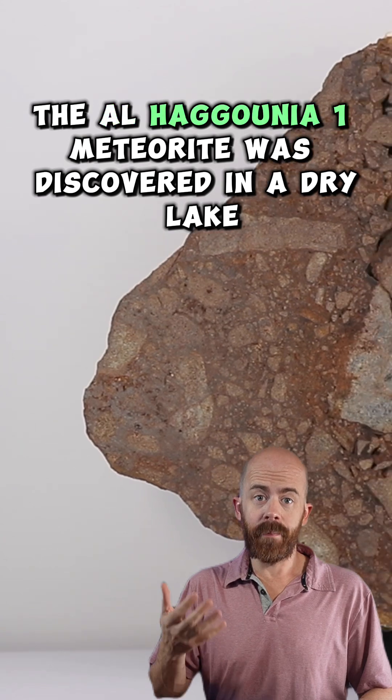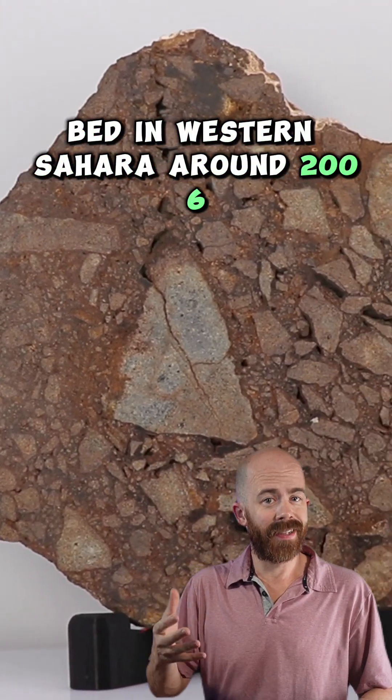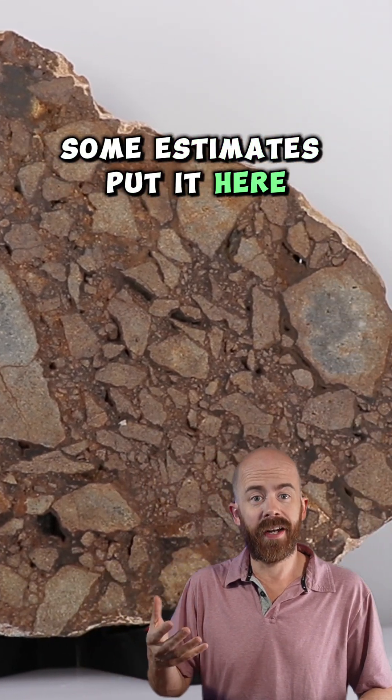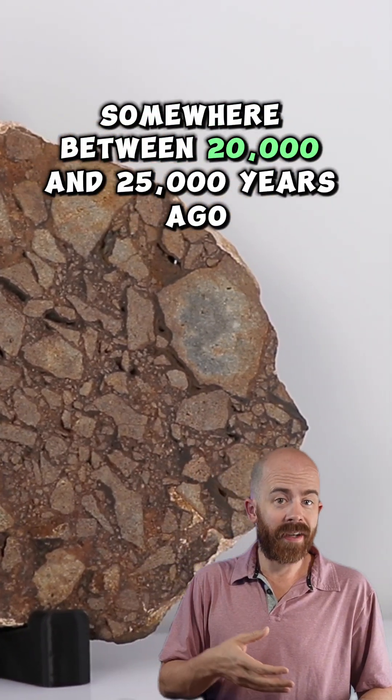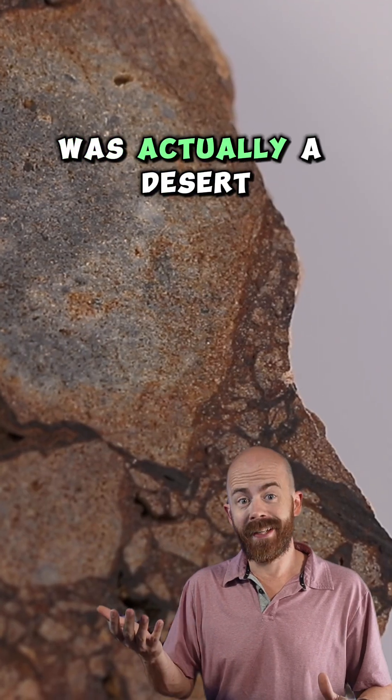The Al-Hagunia 1 meteorite was discovered in a dry lake bed in western Sahara around 2006, but it's been on Earth a lot longer. Some estimates put it here somewhere between 20,000 and 25,000 years ago, which would have been before the western Sahara was actually a desert.